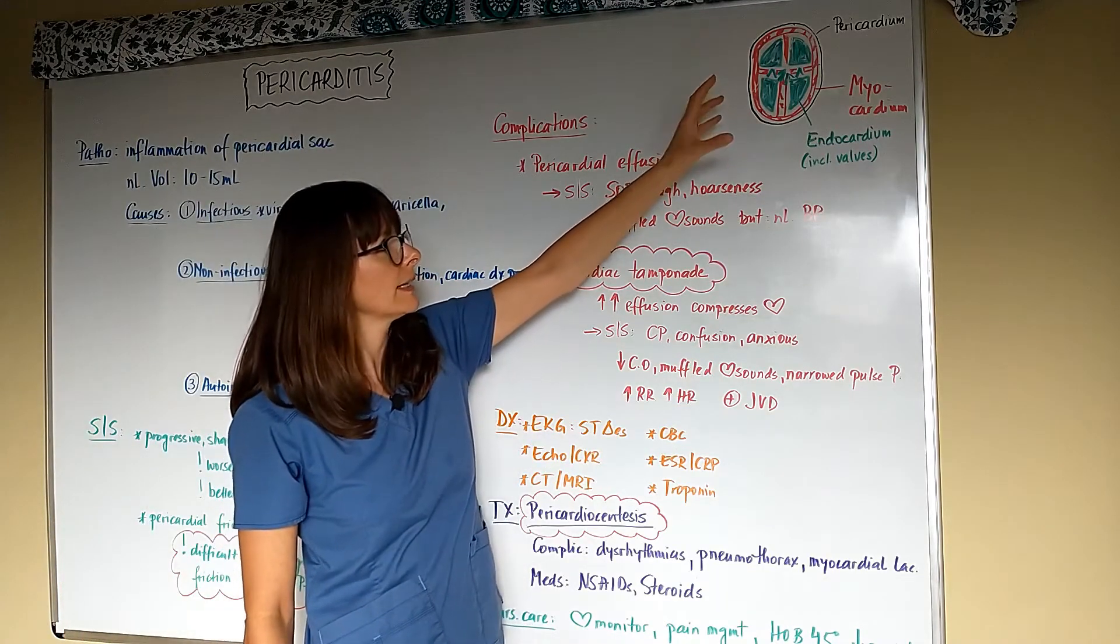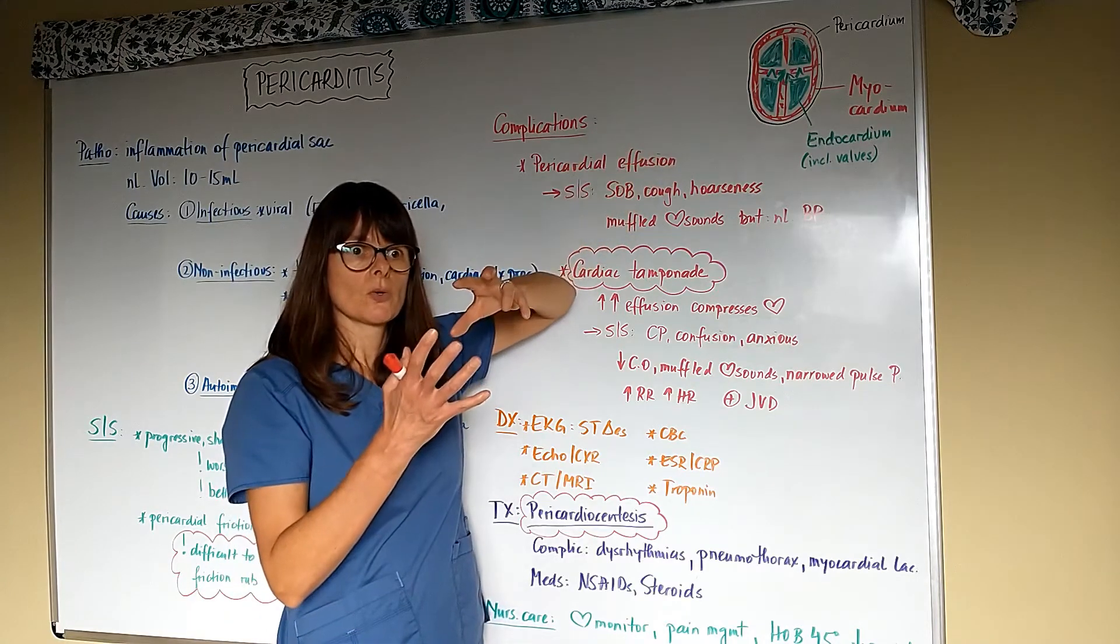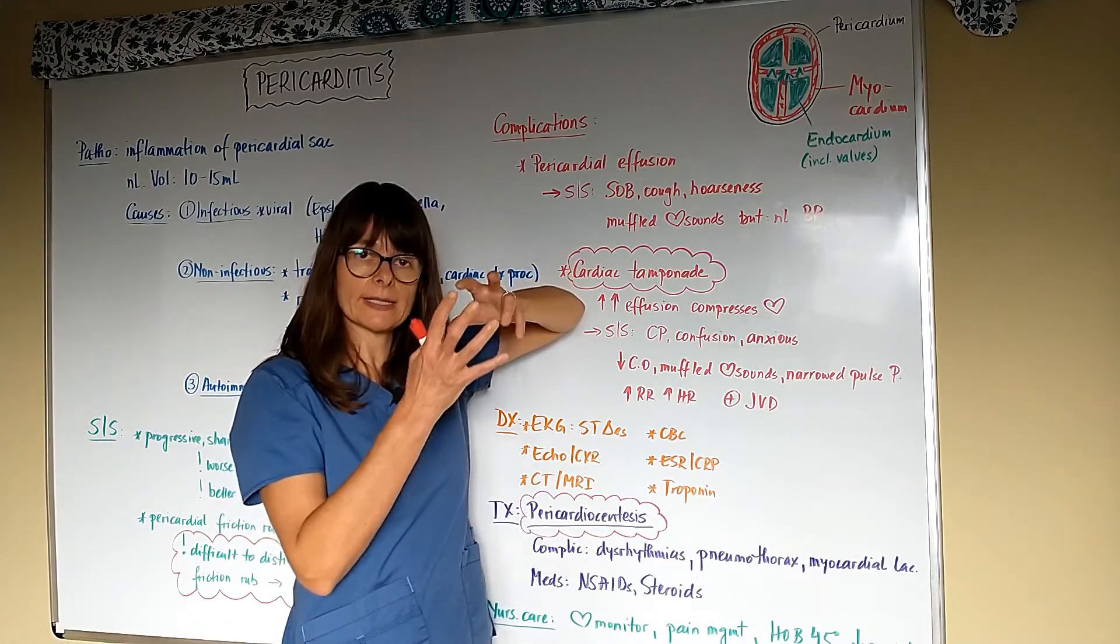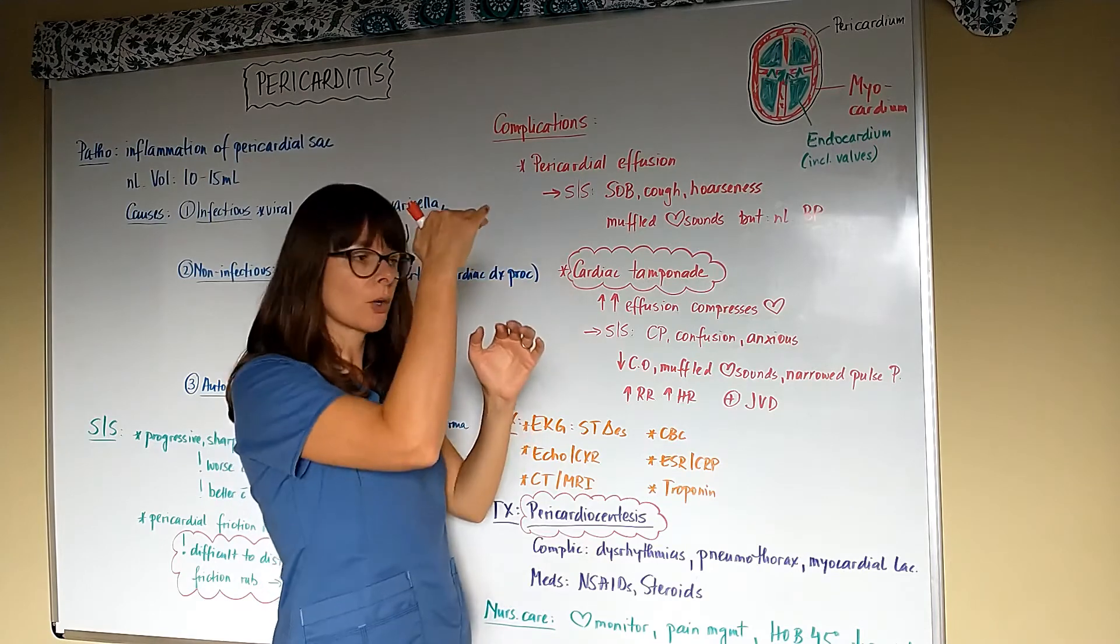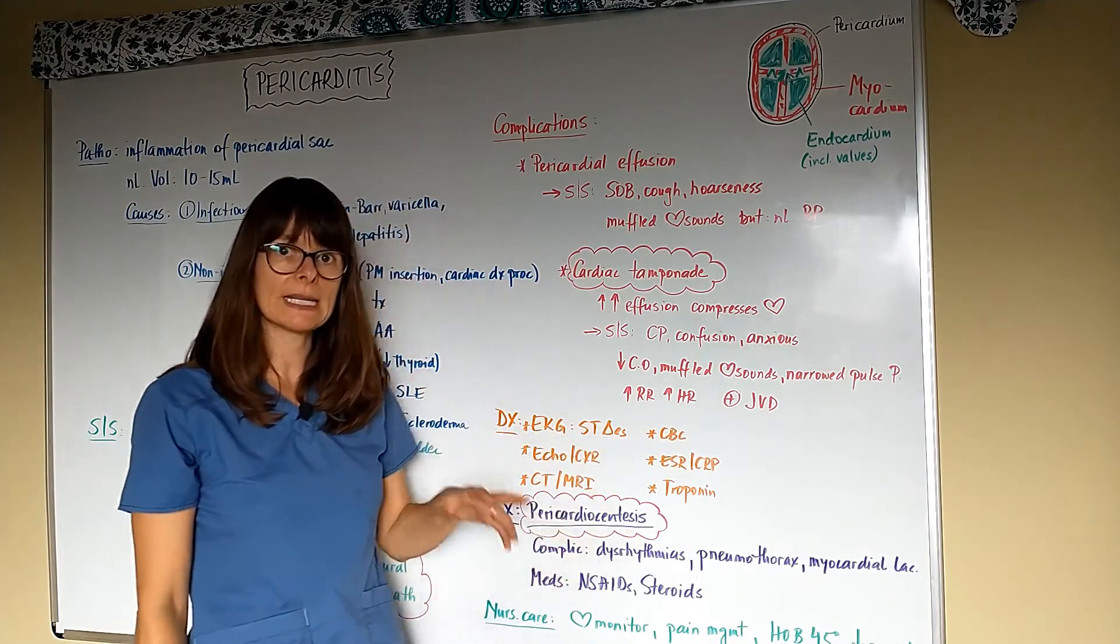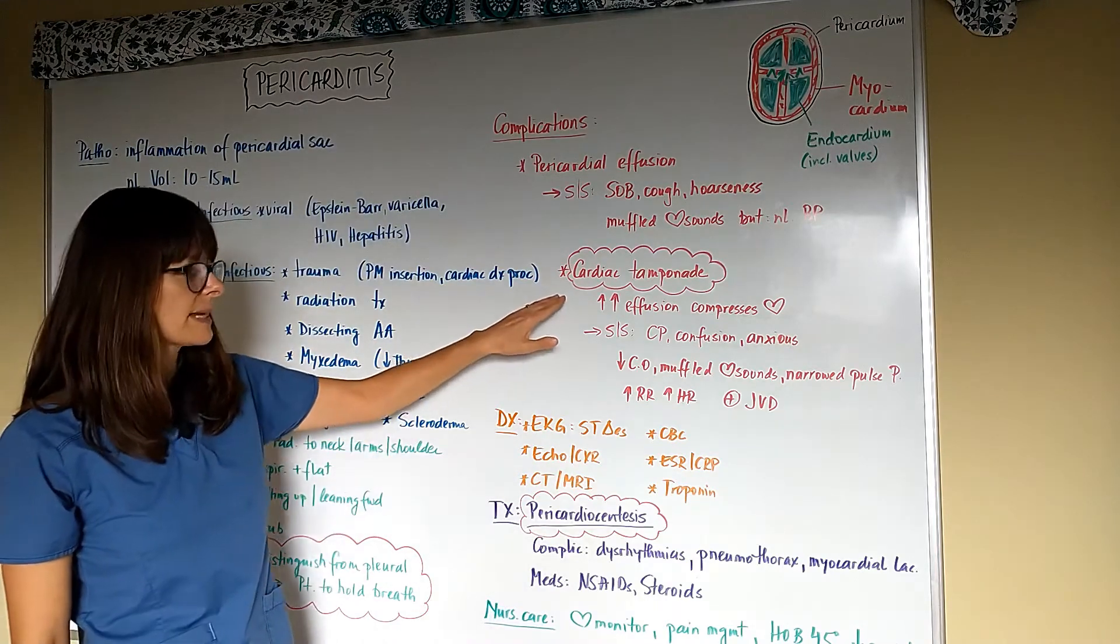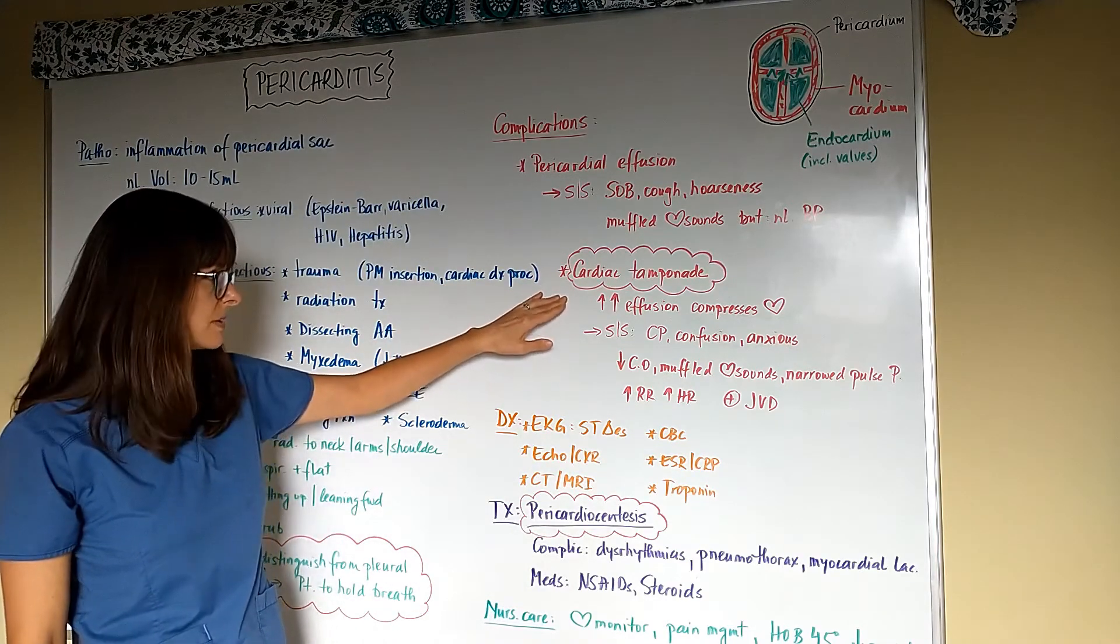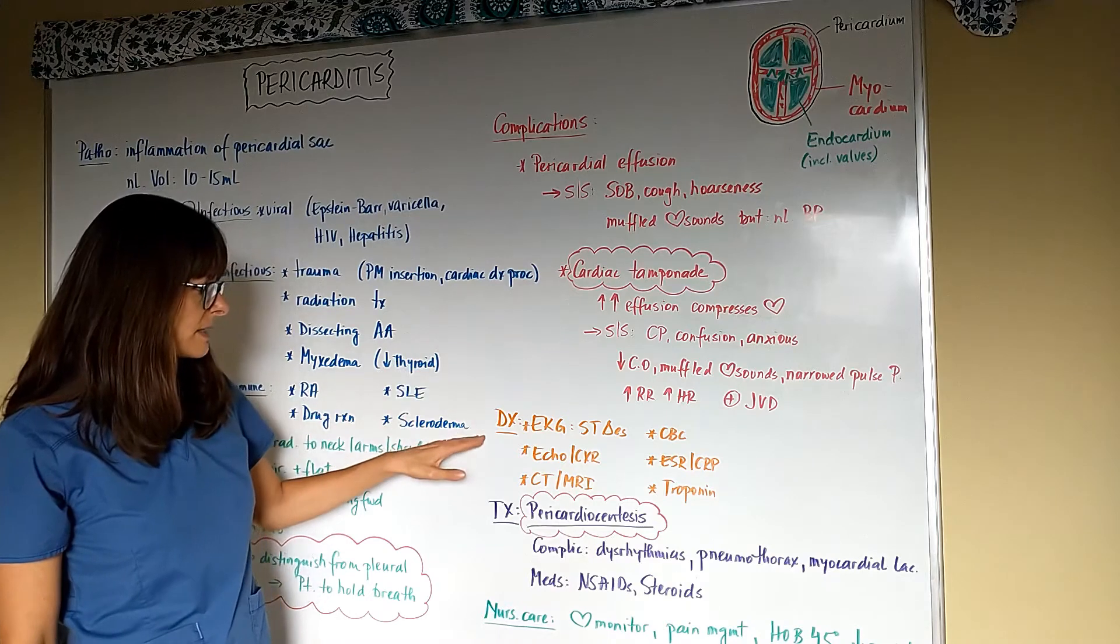And because we have so much fluid around the heart now that it can't really handle all that fluid that's being pumped back into the heart, it's going to back up, causing JVD and maybe even peripheral edema—that would be more of a later sign. So cardiac tamponade is a medical emergency.